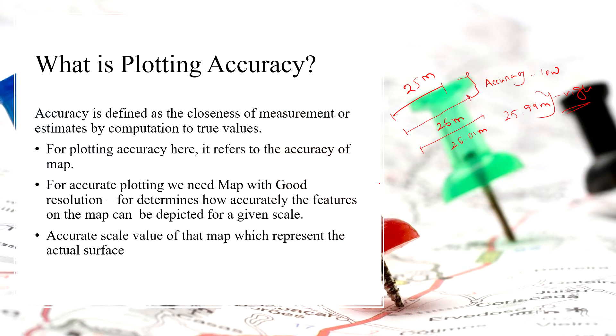For plotting accuracy, it refers to the accuracy of map. For the accuracy above, there are two main components that have to be present on that map. Number 1 is good resolution. Number 2 is accurate scale.